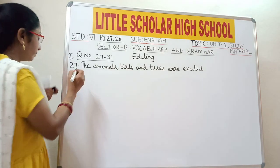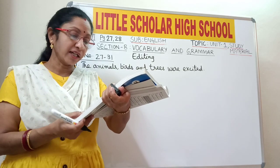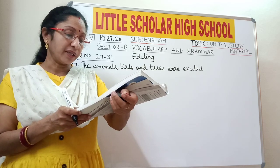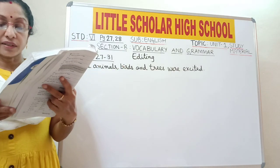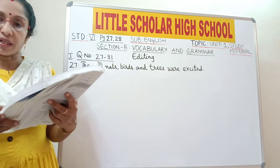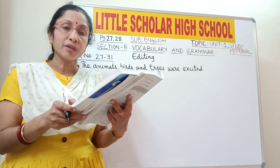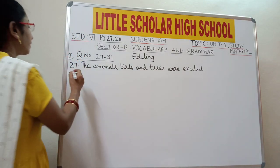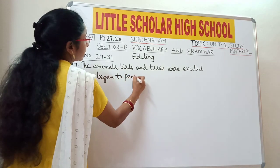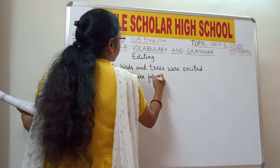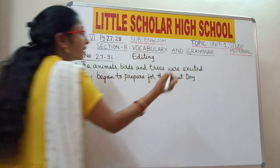Question number 28: 'They began to prepare for the great day when they would give their best to the great one, except the little grey squirrel.' Here the word 'began' is in past tense. After 'began' the next verb 'prepared' is also in past tense, but we should not use both verbs in past tense. So after 'began', the next verb should be in present tense — 'prepare'. Write: 'They began to prepare for the great day.' The remaining sentence continues.